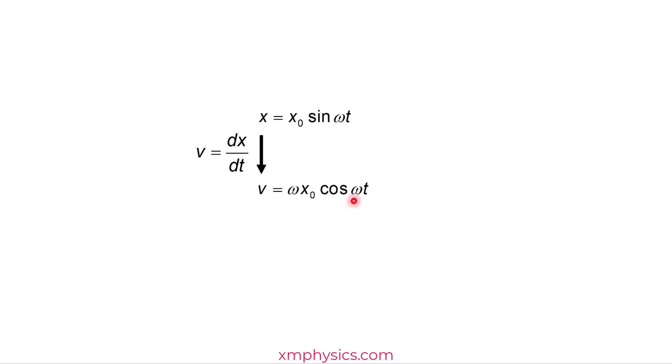If this is how V varies with time, then how would the acceleration vary with time? Same thing. Acceleration is the rate of change of velocity. So when we differentiate this thing, we get A equals negative omega squared X naught sine omega T. When you differentiate cosine, you get negative sine. That's where the negative sine comes from. And remember the chain rule again, so the omega will pop up again. That's why you got omega squared here.